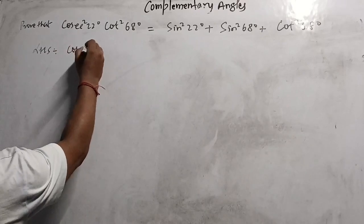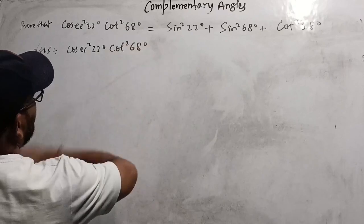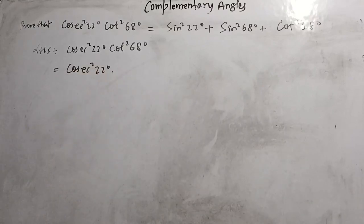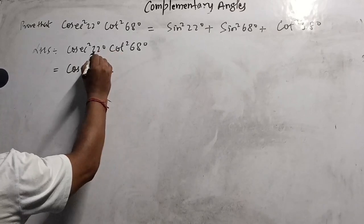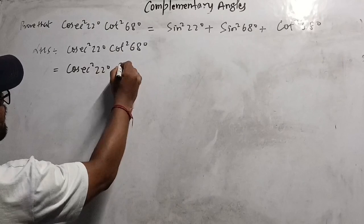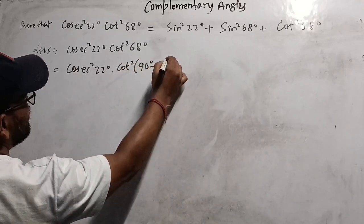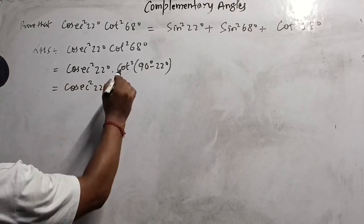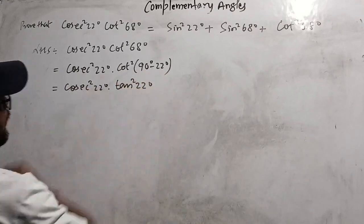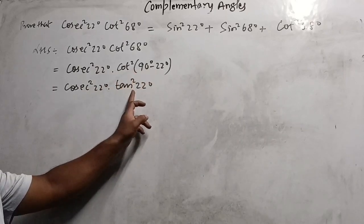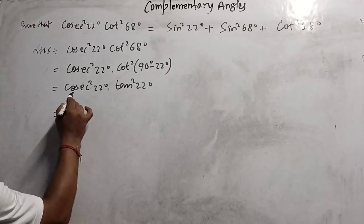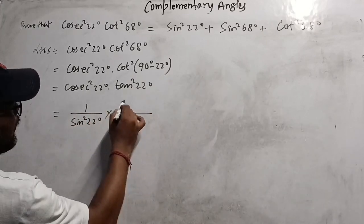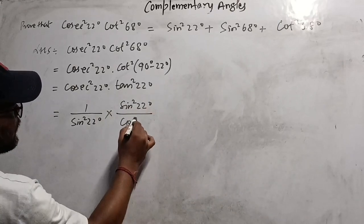The main target to solve this question is to replace 68° with 22°, since 68° = 90° - 22°. So cot²68° becomes cot²(90° - 22°). Using the formula cot(90° - θ) = tan θ, and cosec θ = 1/sin θ, and tan θ = sin θ/cos θ.